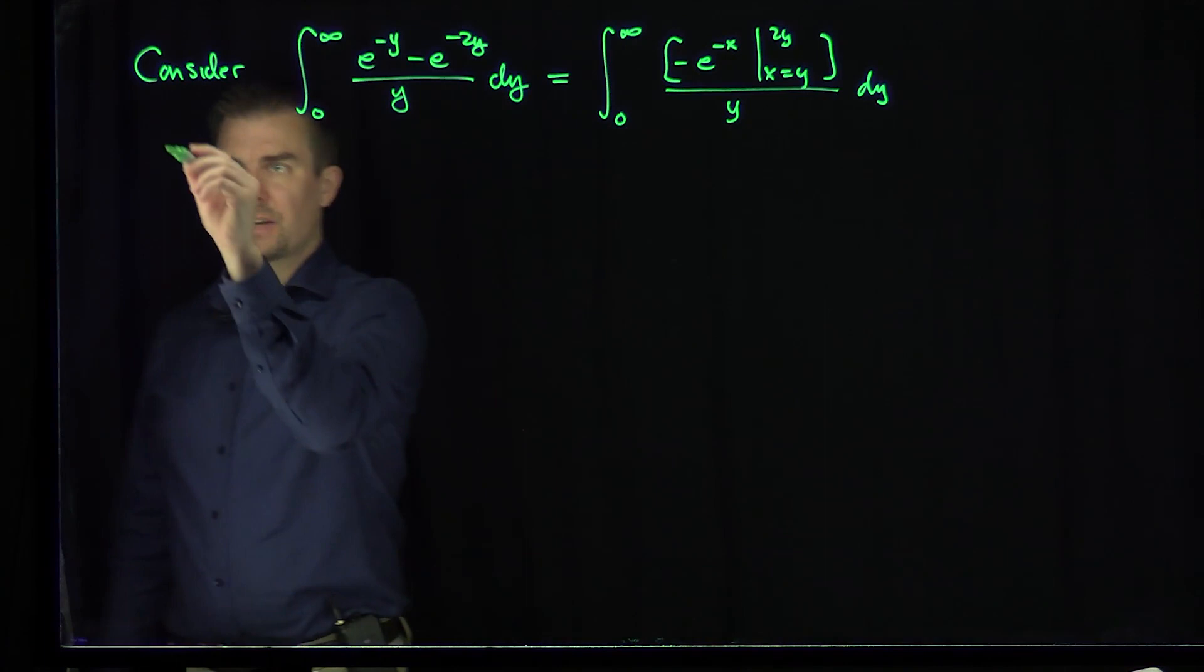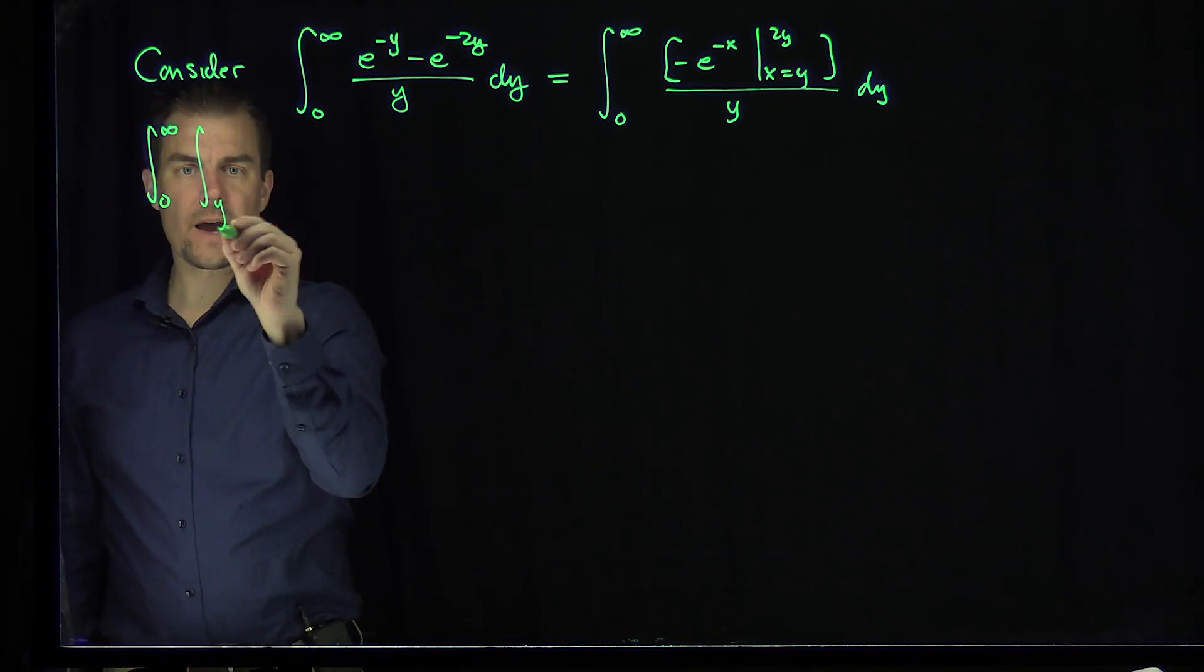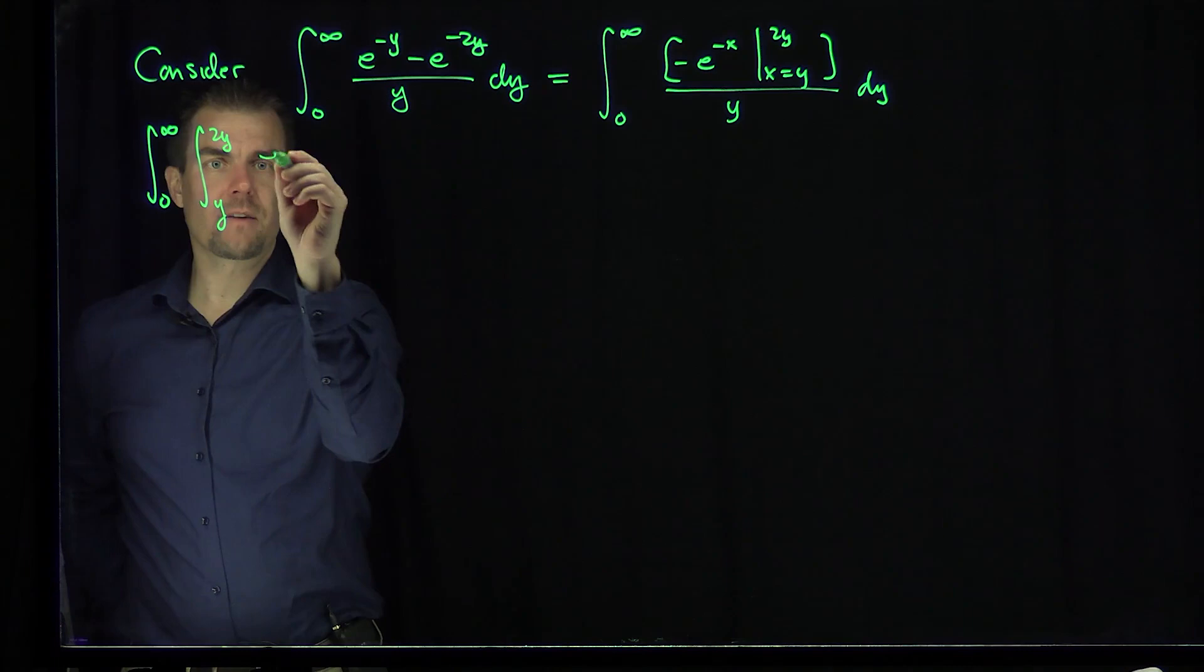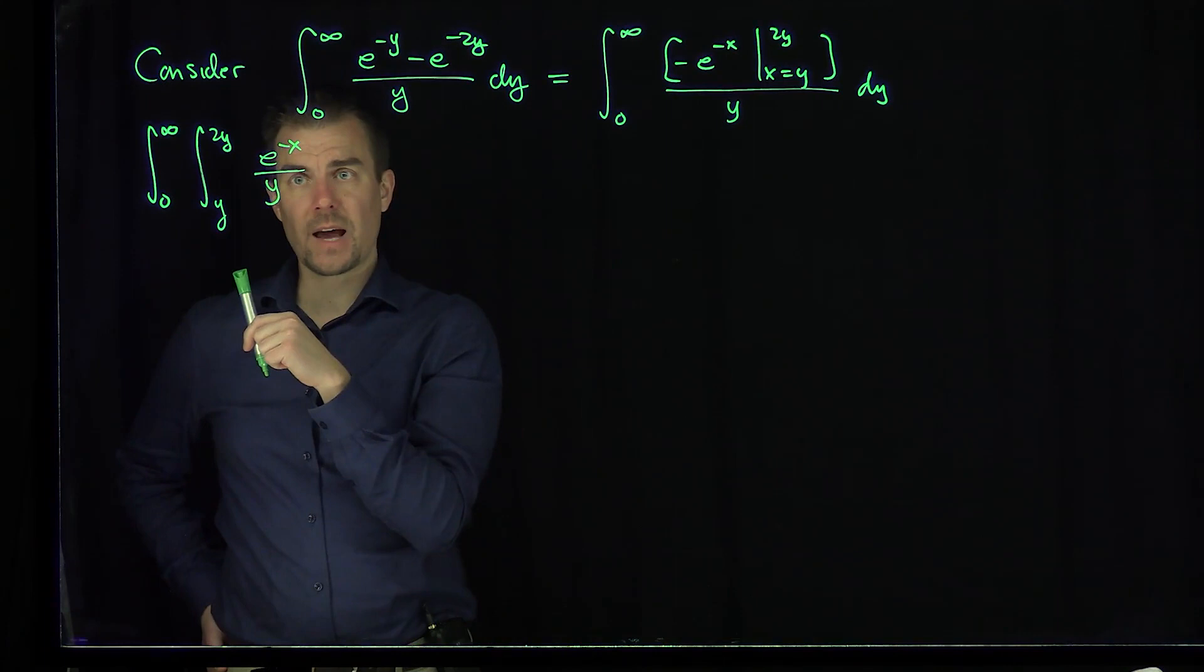And so now, with this in mind, I can write this as an ordinary double integral. I can write this as the integral from 0 to infinity, the integral from y to 2y of e^(-x)/y dx dy.